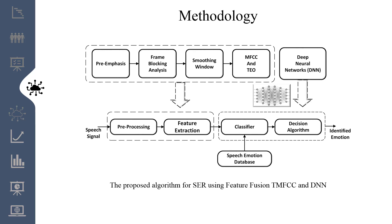This is the proposed algorithm for speech emotion recognition using the feature fusion of TMFCC and deep neural networks. First, the speech signal goes through pre-processing which includes pre-emphasis, frame block analysis, and smoothing window. After pre-processing, it is forwarded to feature extraction. In this paper, three different feature extraction techniques are performed: one with MFCC, another with TEO, and the third is the proposed feature fusion of both, TMFCC. After feature extraction, the features are fed to the classifier for the decision, and the identified emotion is output.